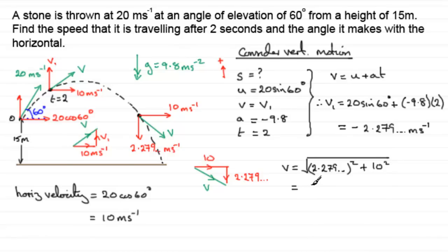Now if you work that out, you'll find that it comes out to 10.256 and so on. And if we round that to one decimal place, that would be 10.3, 10.3 meters per second to one decimal place.